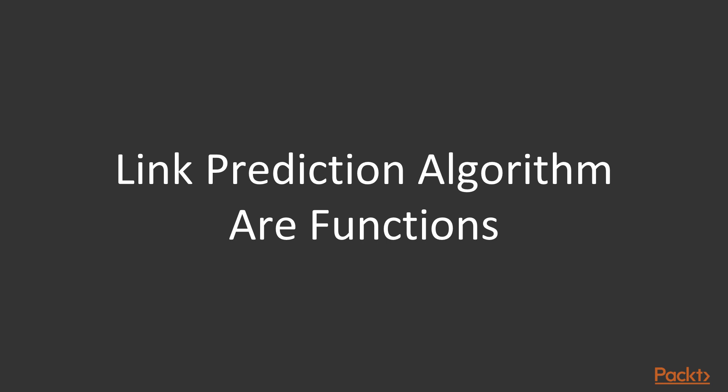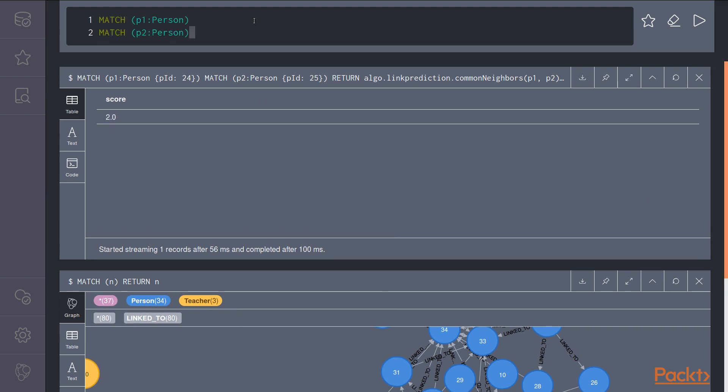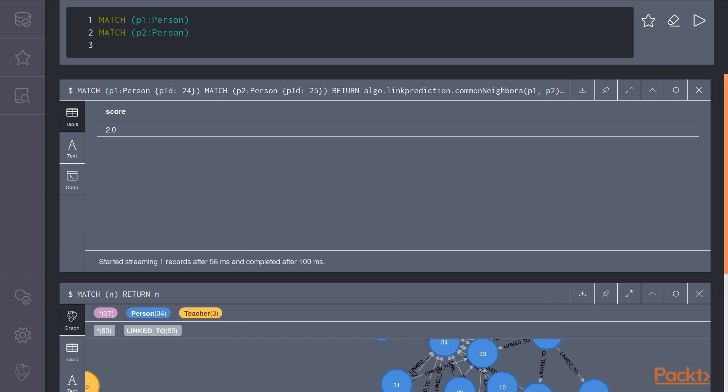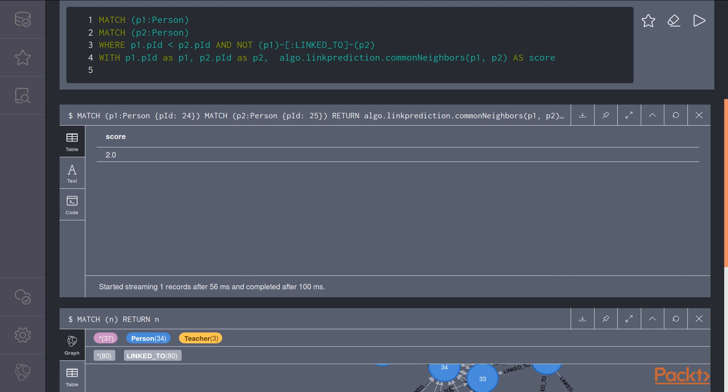For our small graph, we can still find the persons most likely to be connected. Let's write the query together. First, let's select our two persons. To avoid computing the similarity between p1 and p2 and also the similarity between p2 and p1, which will obviously be the same, we will just filter some combinations. We are also excluding the cases where there is already a connection between p1 and p2. Then for each of the remaining pairs, we can call the link prediction algorithm. And as usual, let's return an ordered list of results.